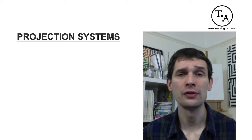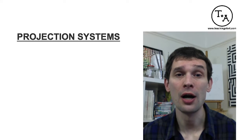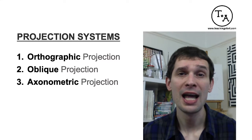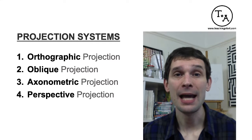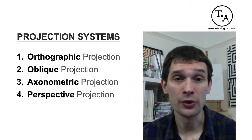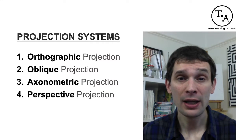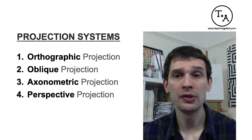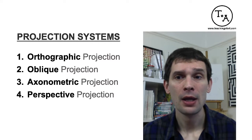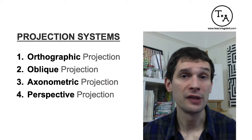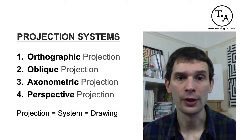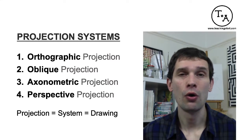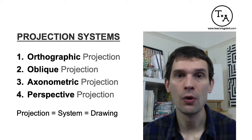We'll cover four different projection systems: orthographic projection, oblique projection, axonometric projection, and perspective projection. Whenever I use the word 'projection,' you could easily substitute another word for it — for example, 'system' or 'drawing.' So you could say oblique projection, oblique system, or oblique drawing — in this context these would mean the same thing.